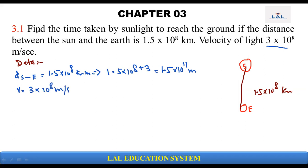We need to find the time taken by light to reach the ground. Here we use the formula that v is equal to d over t. If we have to find the time, then t is equal to d upon v.